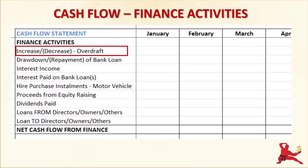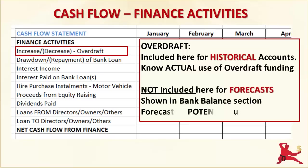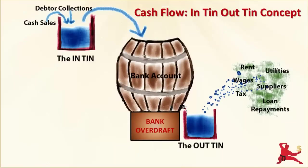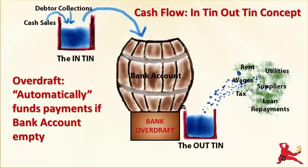Overdrafts are another common form of financing for many businesses. Any change in the overdraft balance is shown under Financing Activities for historical accounts. But for forecasting purposes, the overdraft isn't shown under the Finance Activities section. Instead, it is shown under the Bank Balance section of the Cash Flow Statement. An overdraft facility is like the spare petrol tank attached to your bank account — it is automatically drawn on if you don't have sufficient cash to meet payments. The reason for including the overdraft as part of the Bank Balance when doing forecasts is because you are working out how your forecast cash flow will impact your overdraft: will you need an increase in your overdraft limit, or should you consider other types of financing to meet your funding requirements?